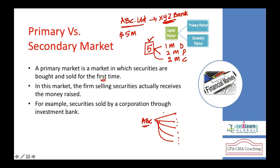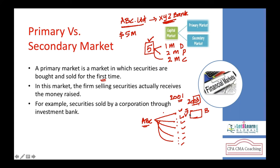The secondary market is where investors who previously bought shares want to sell them. For example, if a company issued shares in 2001 and a new potential investor wants to buy them in 2003 while an existing investor wants to sell, there needs to be a market to facilitate buyers and sellers meeting and making transactions without the involvement of the company.